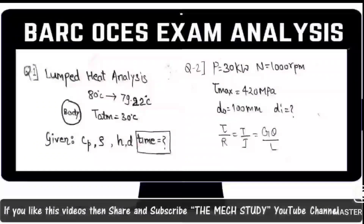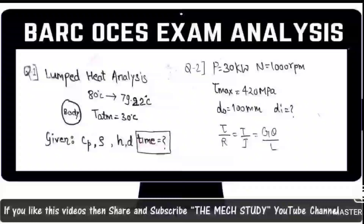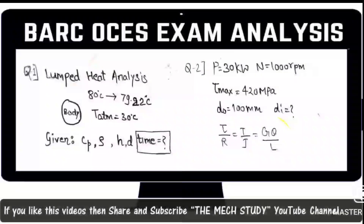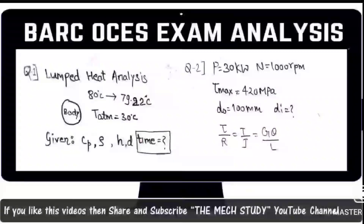The next question involves torsion. Power is given as 30 kilowatt, speed as 1000 RPM, maximum shear stress as 420 MPa, and outer diameter of the shaft as 100 mm. You need to find the inner diameter — this is a hollow shaft problem. Use the formula: τ/r = T/Z = Gθ/L. Put in all the data to calculate the inner diameter. Similar questions have appeared in GATE examinations.